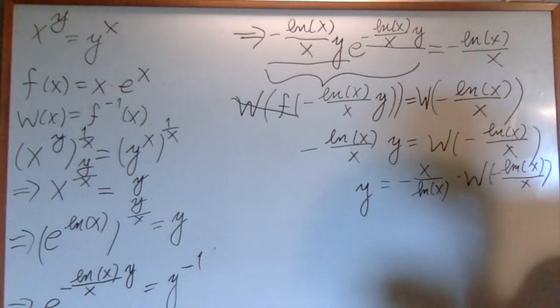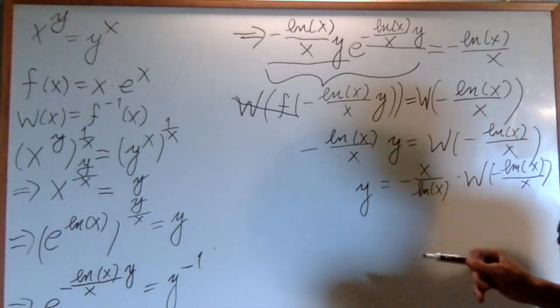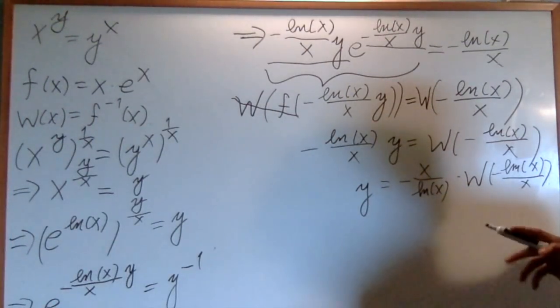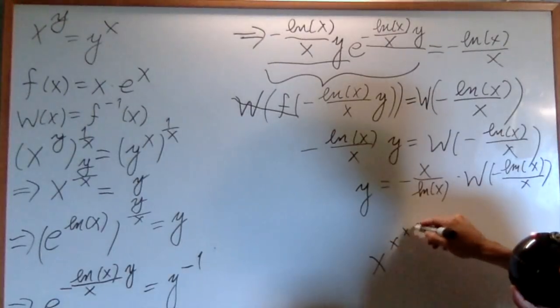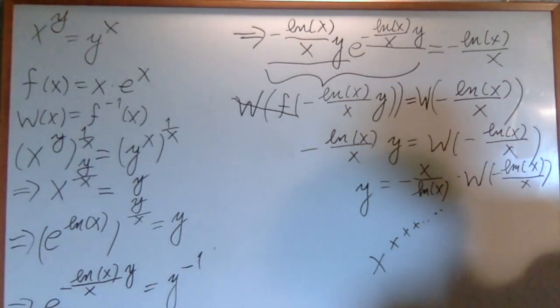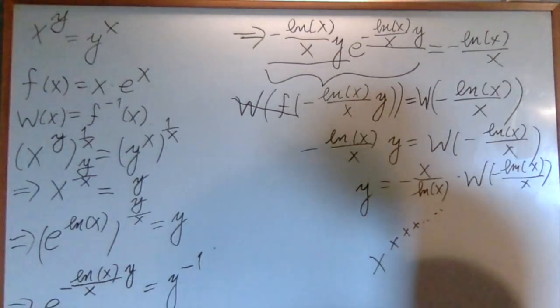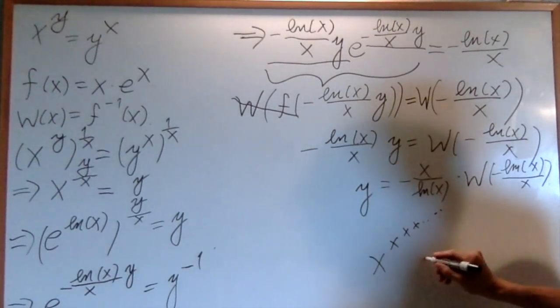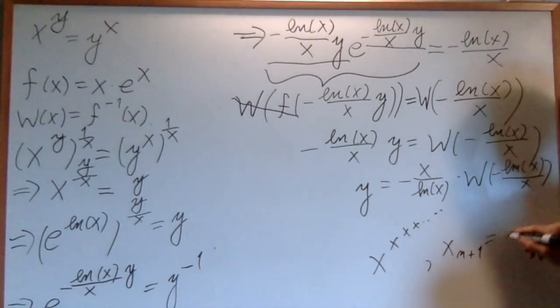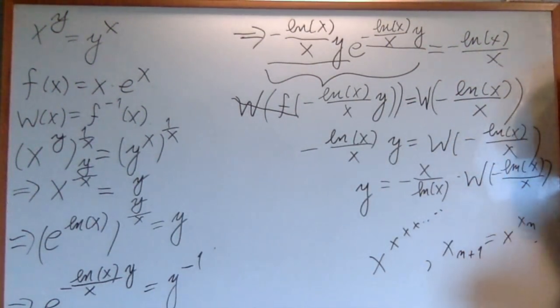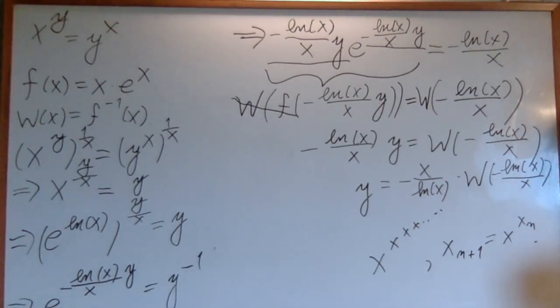So, the nice challenge question, then, is to use the Lambert W function to describe power towers. x to the x to the x to the x, so on and so forth. How can you find the value of this power tower? I'll give you a hint. This is described by the recursive sequence, xn plus 1, is equal to x to the power of xn. You can use this, and then the Lambert W function to find out what you want.